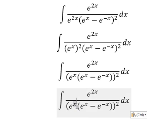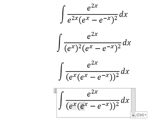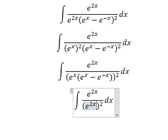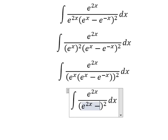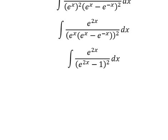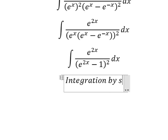So e to the power of x multiply by e to the power of x, that is about e to the power of 2x. And the next one, that is about number one.